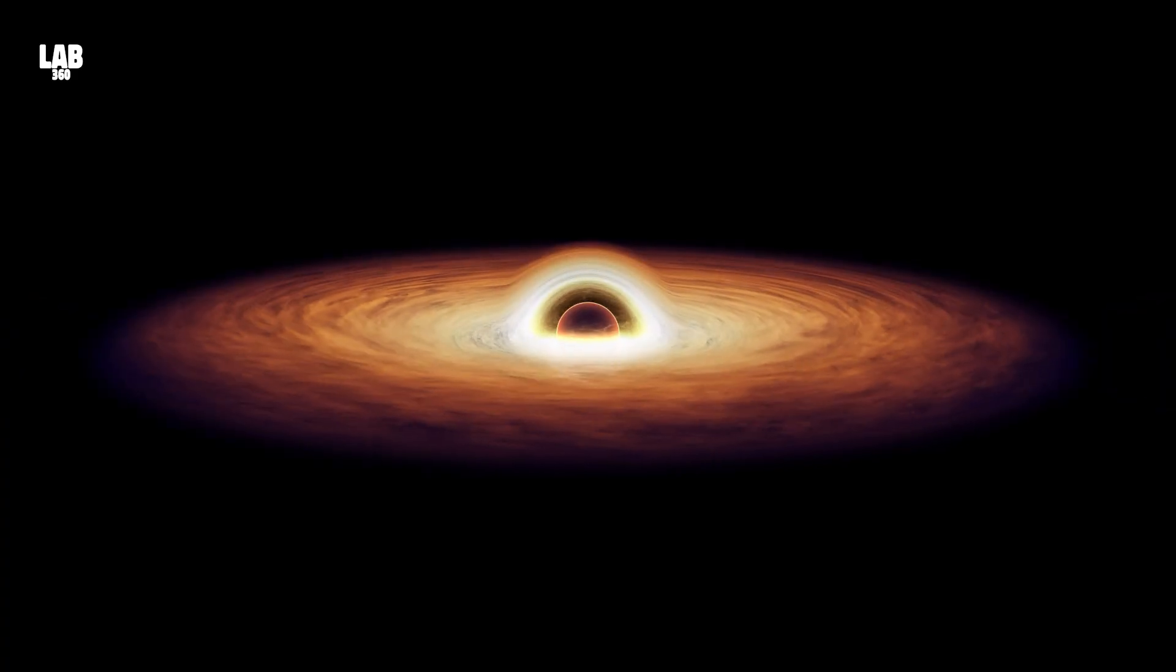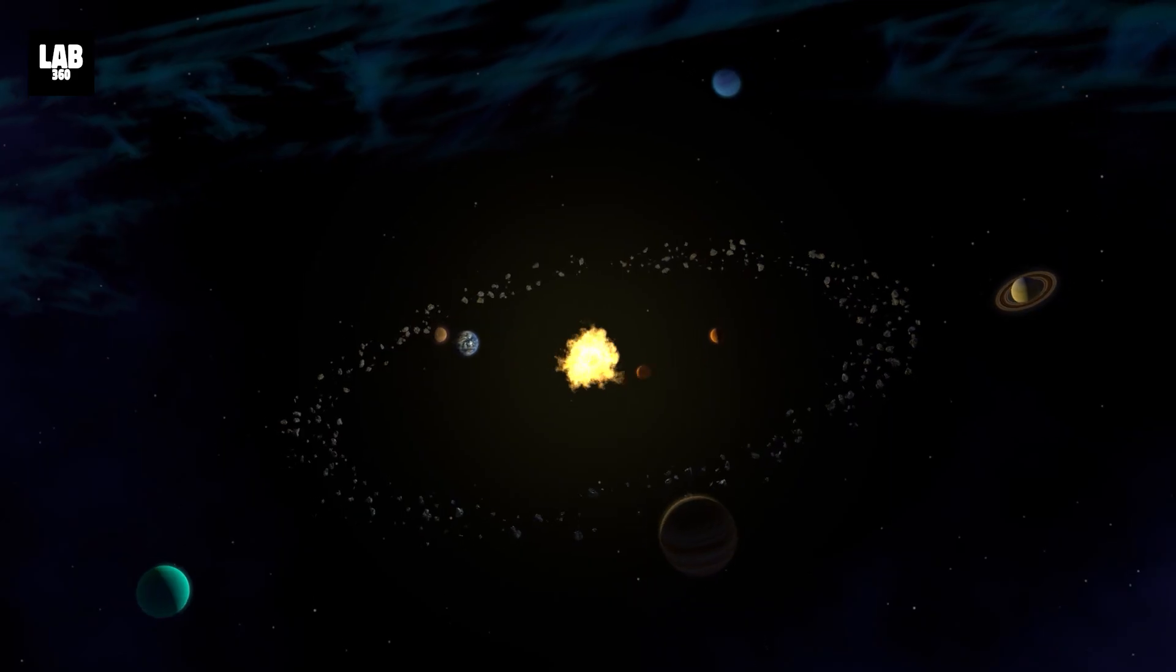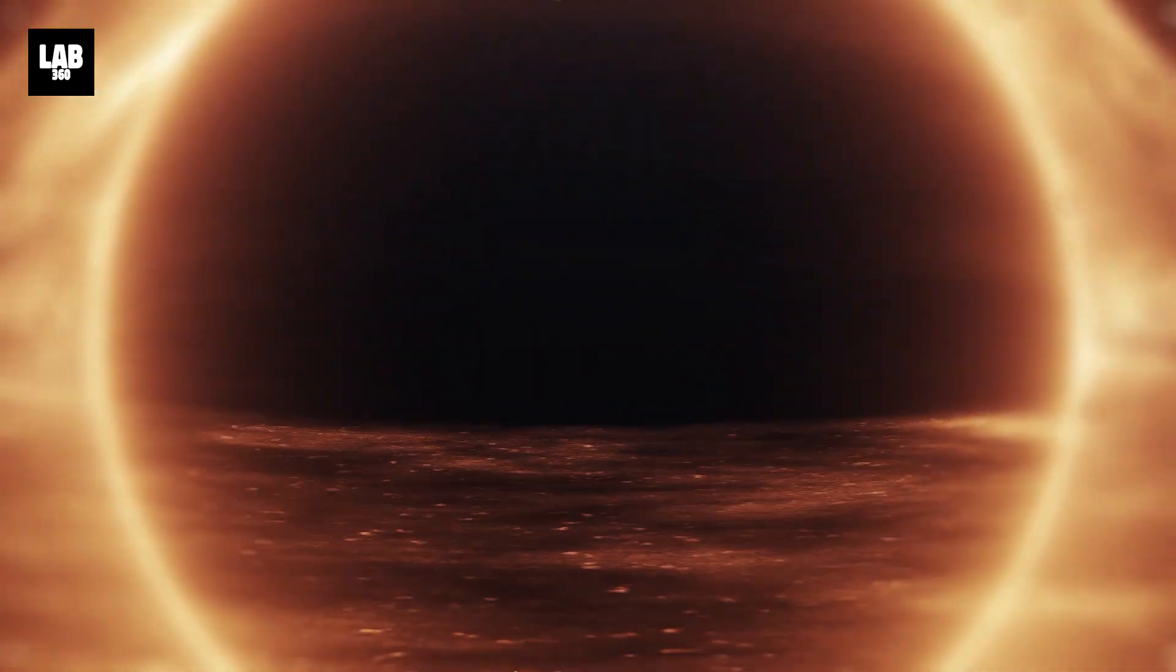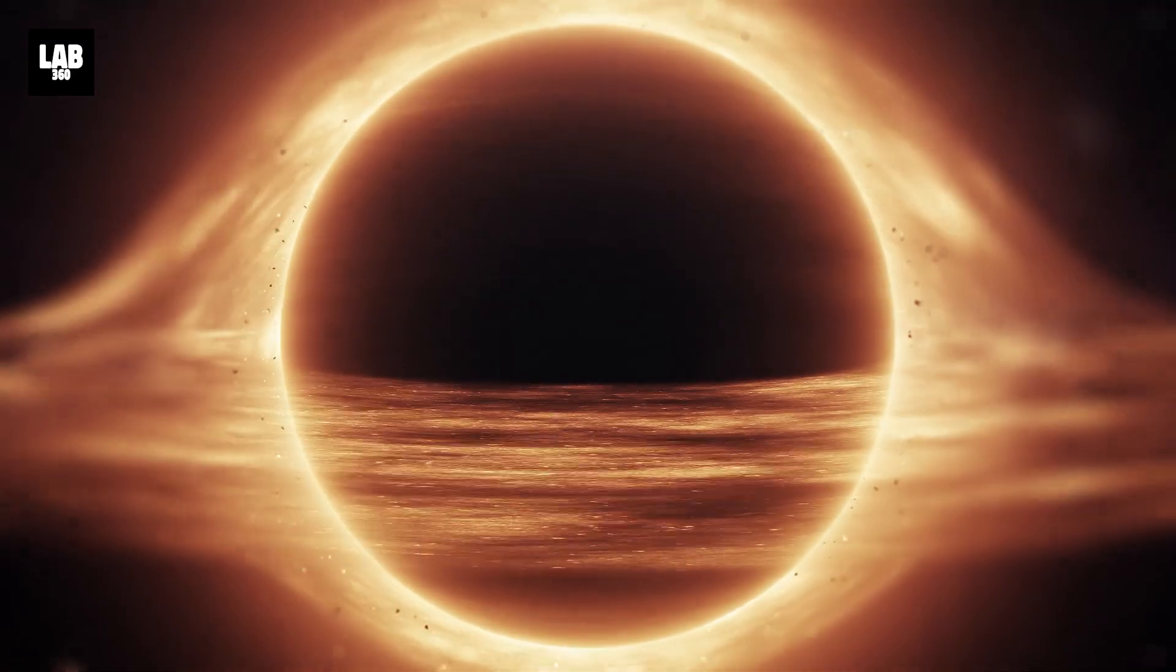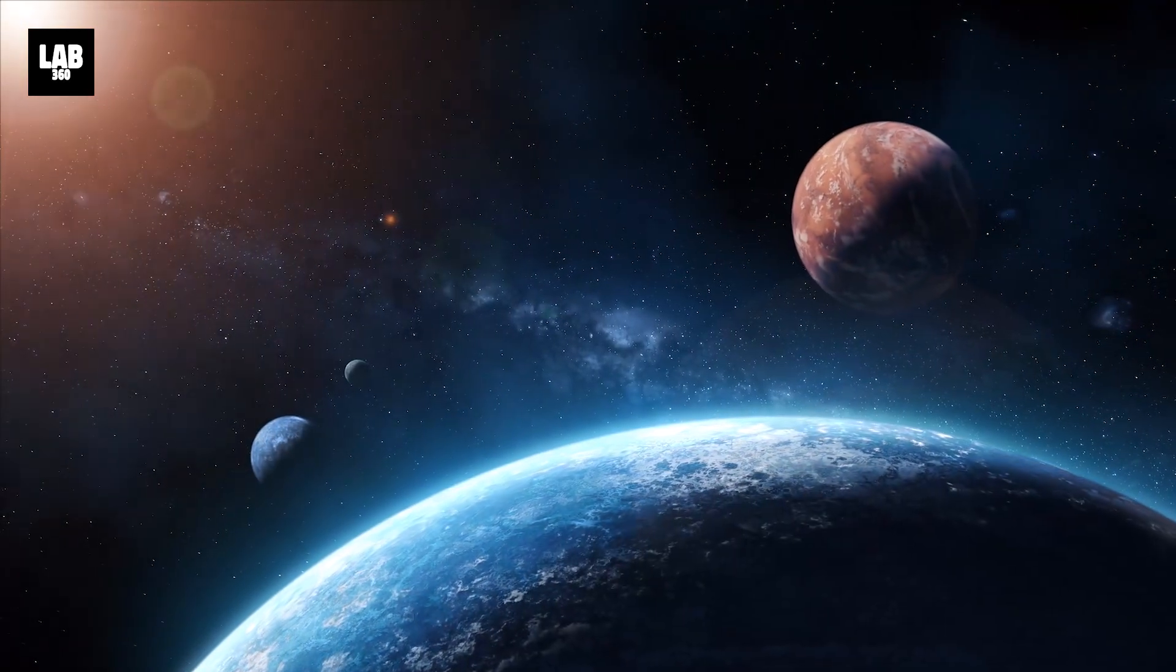If the Sun were to suddenly become a black hole, the consequences for our solar system would be both fascinating and catastrophic, though not in the way one might initially think. While the transformation of the Sun into a black hole would have a dramatic effect on the Sun itself, it would not immediately destroy the Earth or other planets.